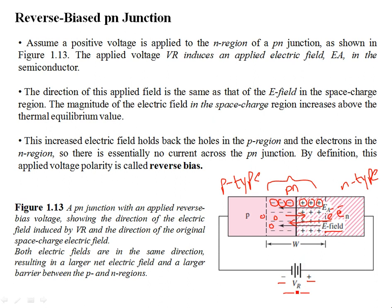Now, if you apply the battery potential such that the negative is with the P-type region and the positive is with the N-type region, it enhances the strength of this E-field.